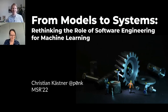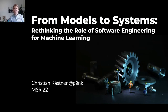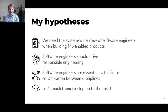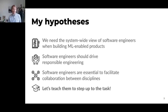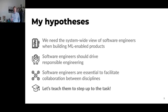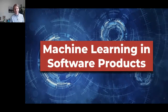Thanks Nicole. In this talk I'm trying to convince you that we as software engineers should assert a more dominant role in building products with machine learning components. We should really shift from thinking about the model to thinking about entire systems. I'm going to convince you of four points: we need a system-wide view, software engineers should drive responsible engineering, software engineers are essential to facilitate collaboration between disciplines, and the way to achieve this is through education.